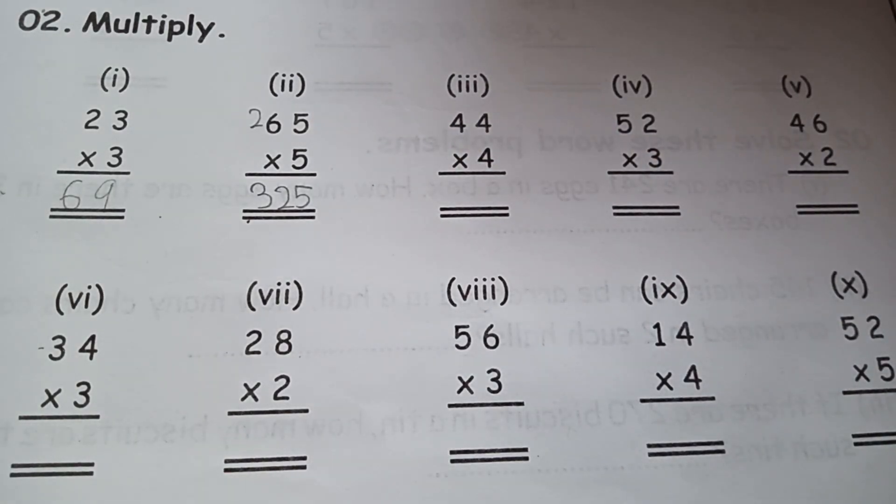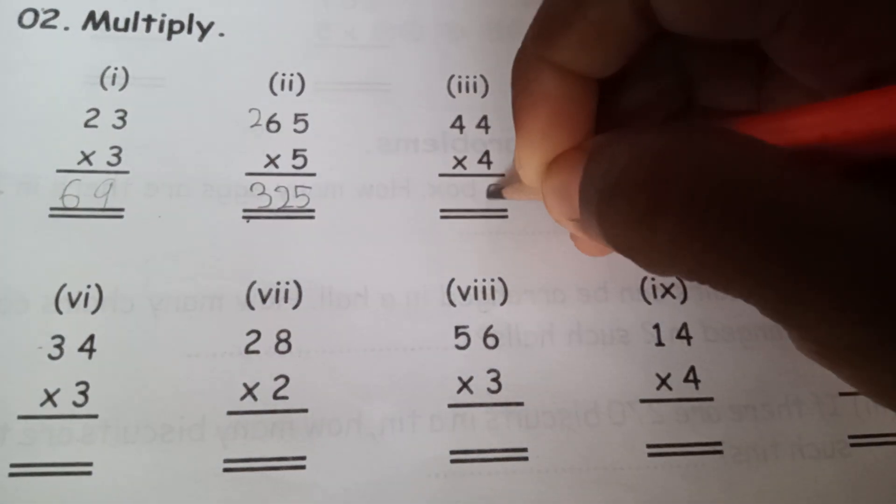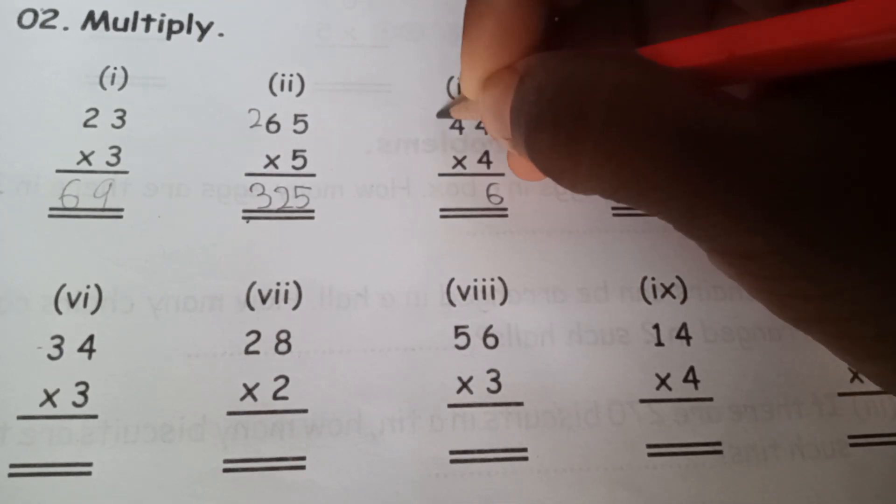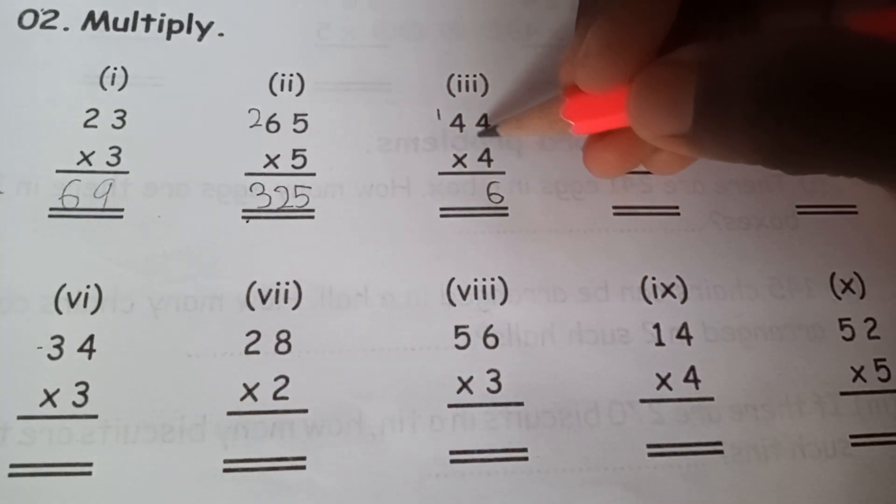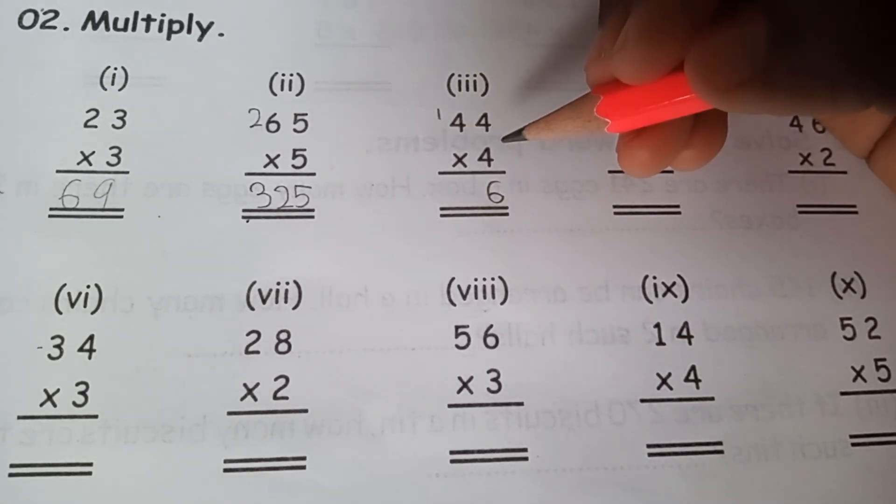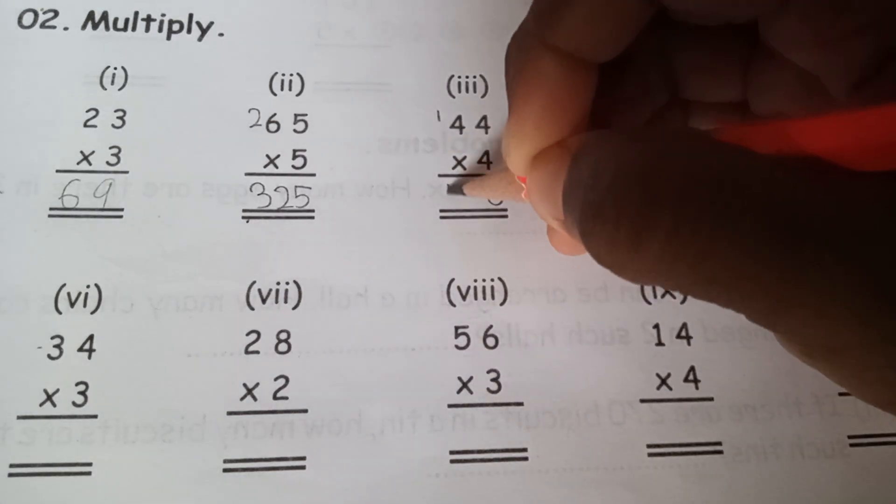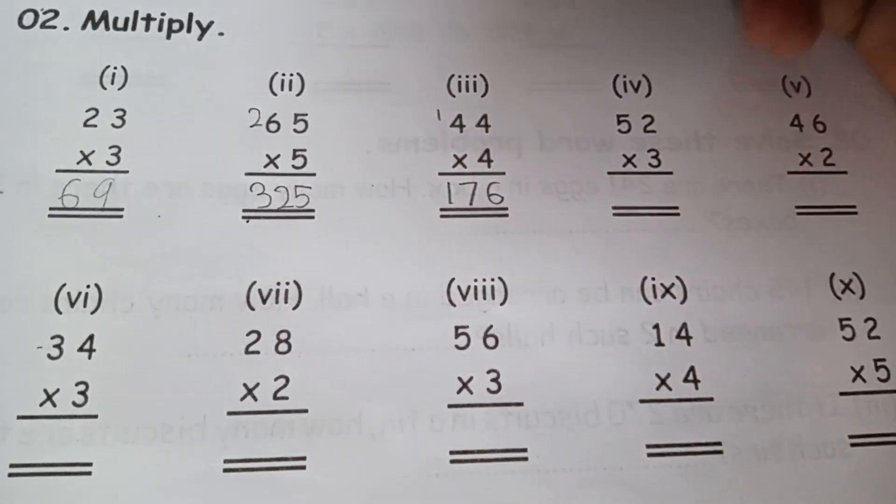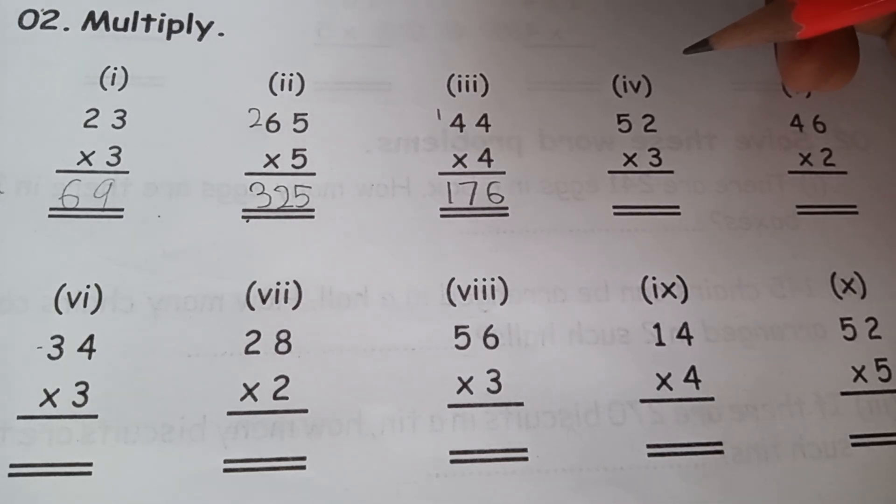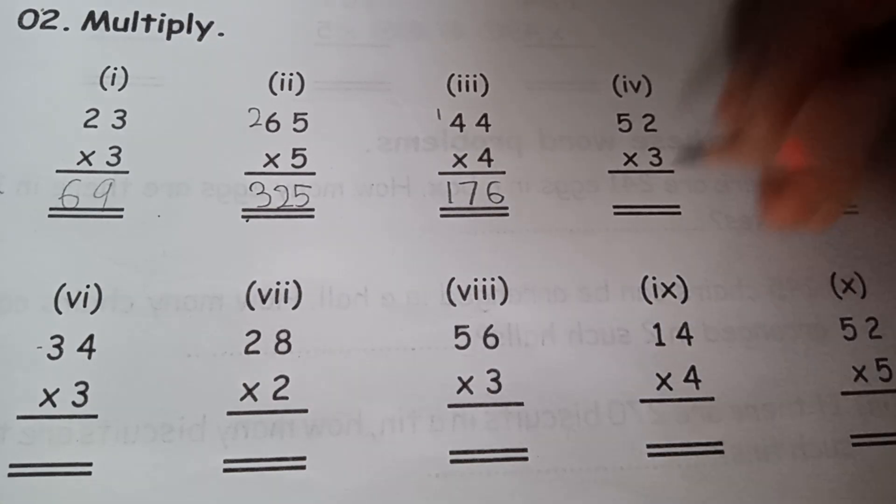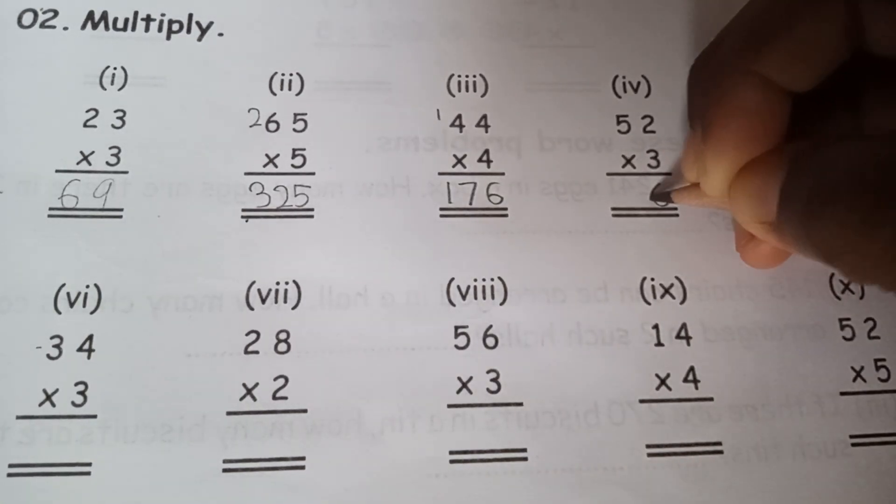The next one: 44 times 4. 4 times 4 is 16, and 1 plus 16 plus 1 is 17, so the answer will be 176. Okay, the next one: 52 times 3. 3 times 2 is 6, 3 times 5 is 15, so the answer will be 156. Good.